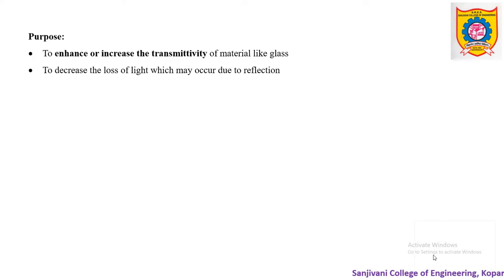The main purpose is to enhance, that is to increase the transmittivity of material like glass. On glass, if the anti-reflection coating is applied, then the transmittivity of the glass is increased. Also, it decreases the loss of light which may occur due to reflection. As we know that when light falls on transparent material like glass, it is partly reflected and partly refracted.